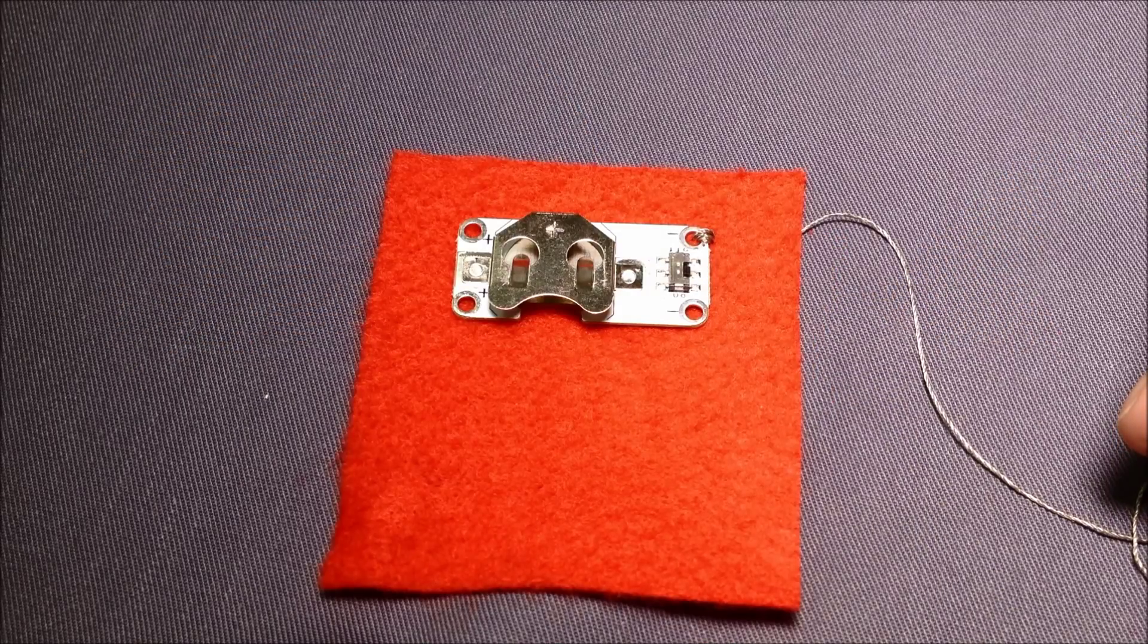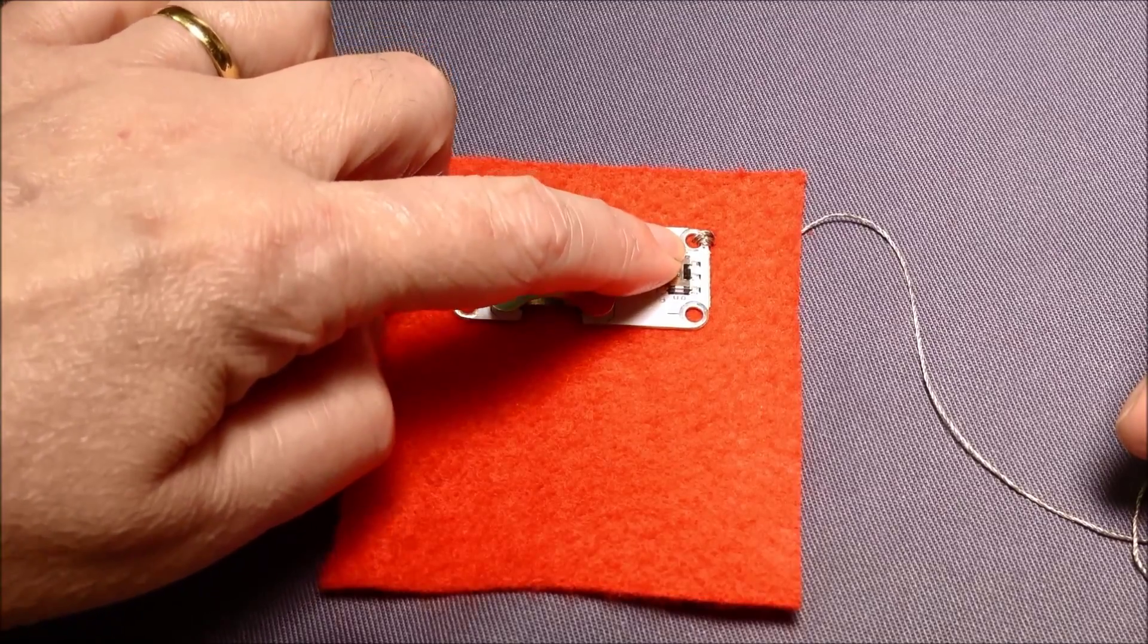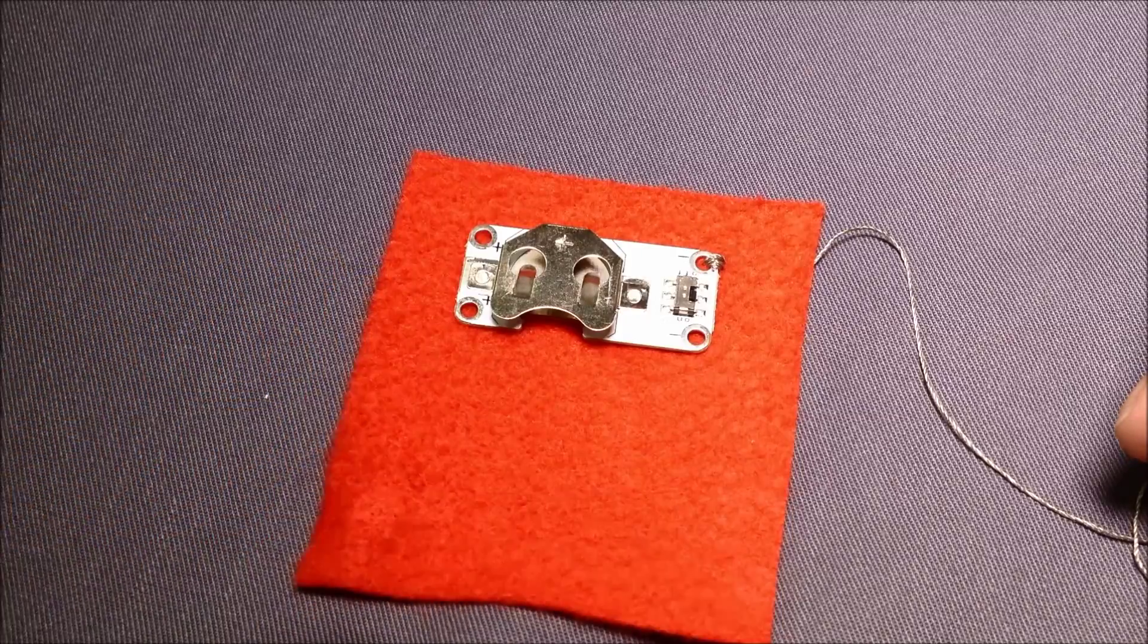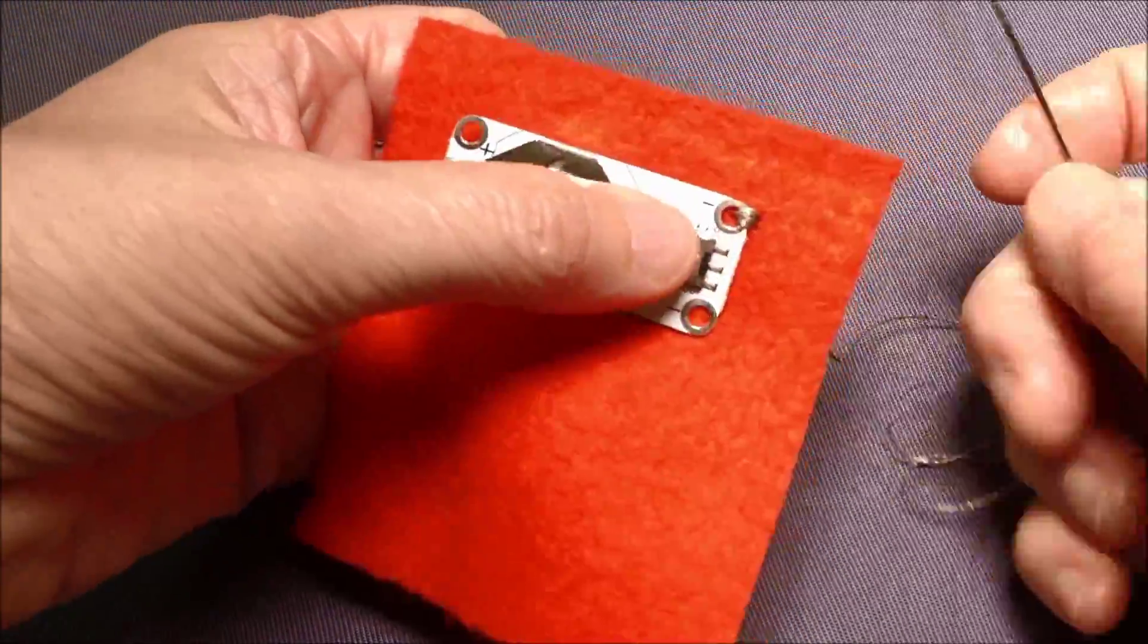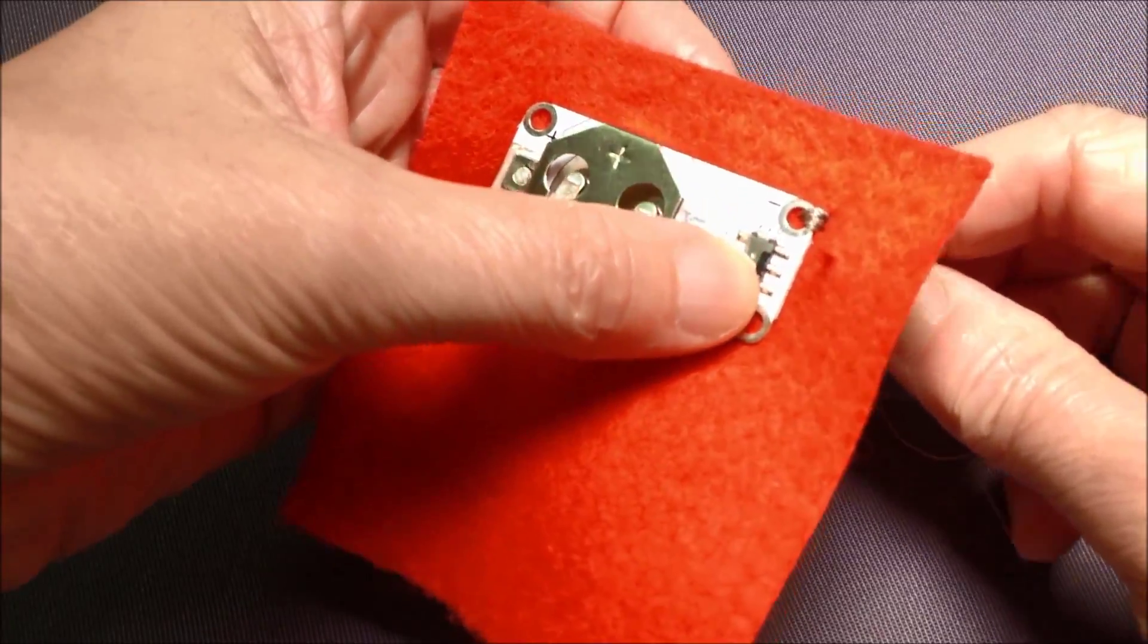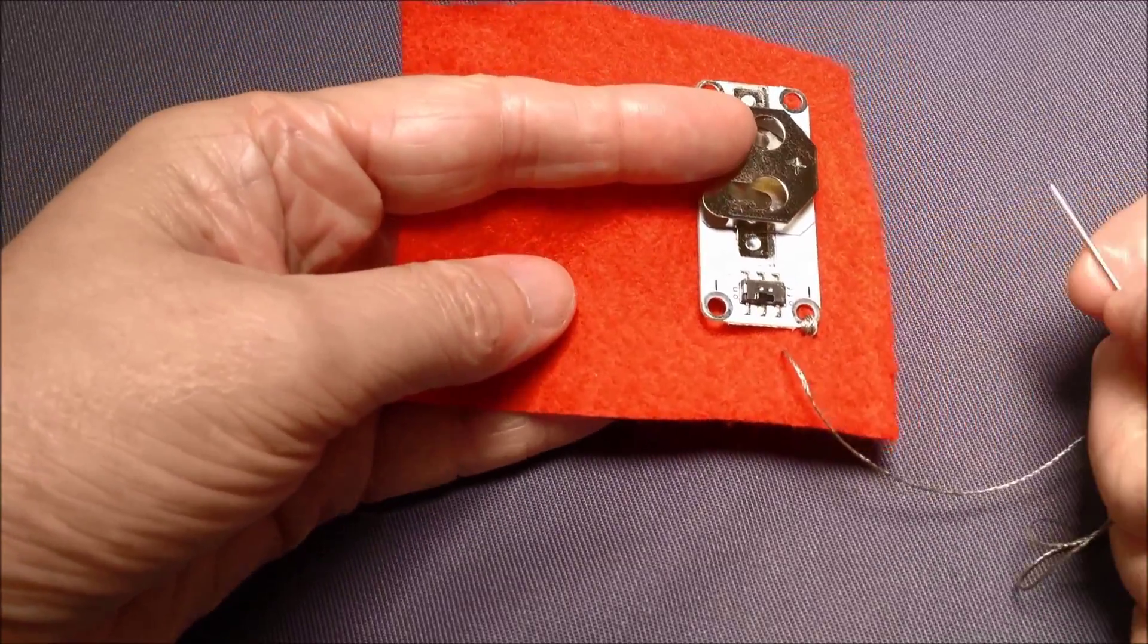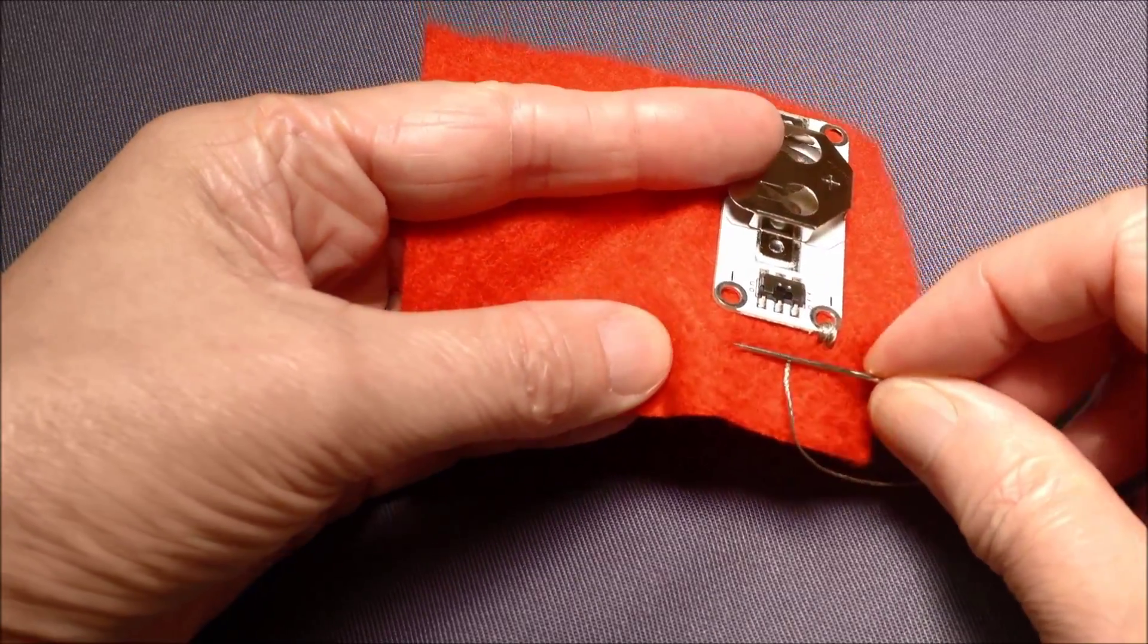The second stitch is a running stitch, and this is going to take us from the hole in the cell holder to our LED or whatever else it is that we've got down here. I've currently got my thread on the back of my fabric, so I'm just going to bring it up to the front. Just turn my fabric round slightly, and I'm going to go into my fabric and then up again.